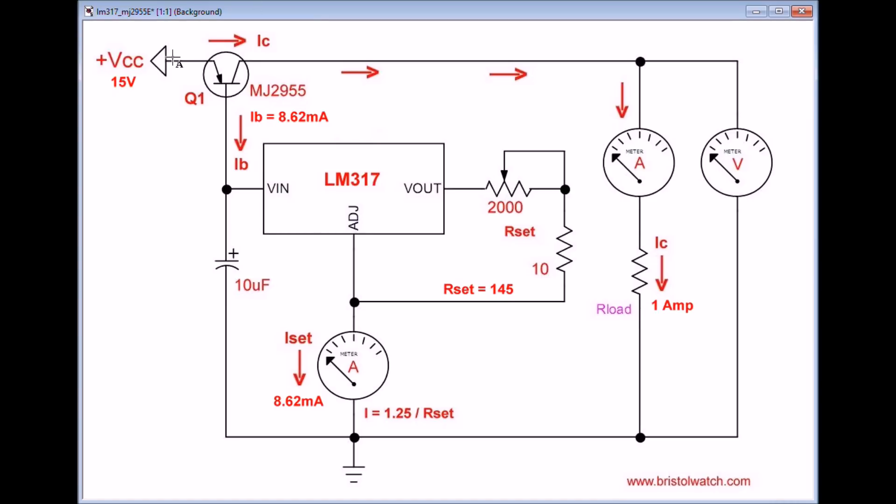Let's follow our current flow from emitter to collector, and that current flow from emitter to collector is controlled by the current flow from emitter to base, which is controlled by the LM317 and is set for 8.62 milliamps. 8.62 milliamps times 116 is approximately 1 amp. And that's what I adjusted it for originally when I had an amp meter in series with my load.